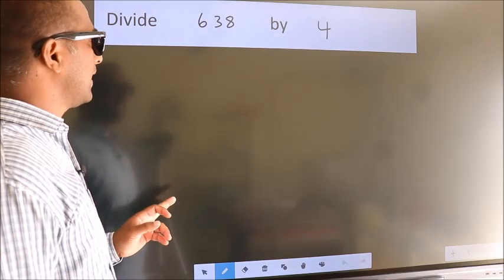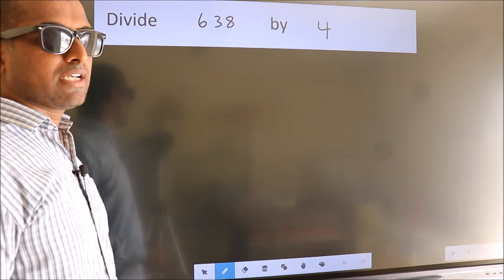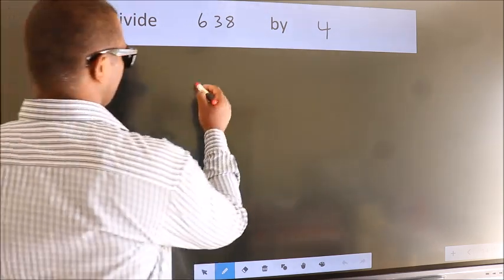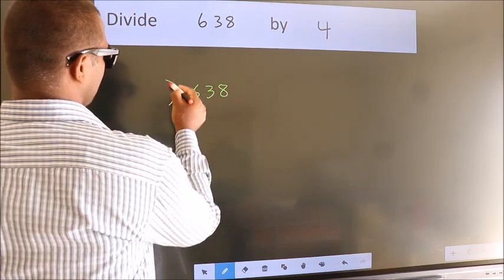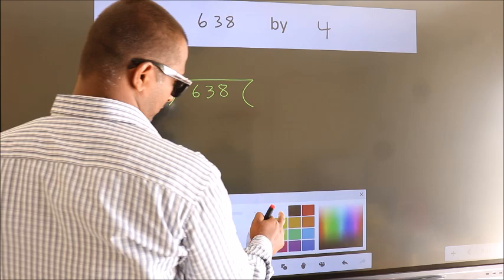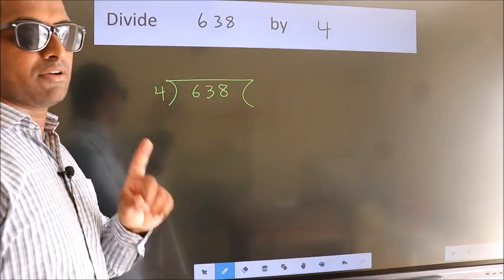Divide 638 by 4. To do this division, we should frame it in this way: 638 here, 4 here. This is step 1.